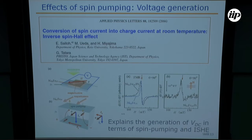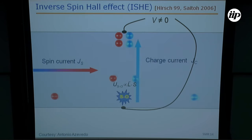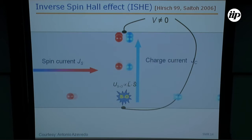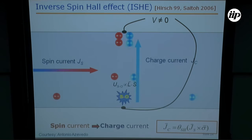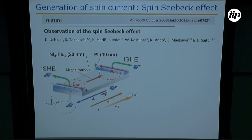One year later, Saito and colleagues, who had a very good theoretical physicist in the group, did very similar experiments but explained them in terms of the inverse spin Hall effect. The inverse spin Hall effect is the Onsager reciprocal of the spin Hall effect. Electrons with opposite spins moving in opposite directions are deflected in the same direction, so there is a buildup of charge and a voltage. Spin current is converted into charge current, and the expression is the same except that the vector product changes sign.